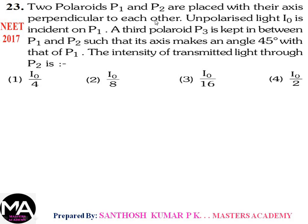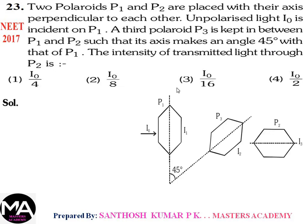Question 23: Two polaroids P1 and P2 are placed with axes perpendicular to each other. Unpolarized light I0 is incident on P1. A third polaroid P3 is kept between P1 and P2 with its axis at 45° to P1. Find the intensity of transmitted light through P2. Light passing through P1 gives I1 = I0/2. P3 is at 45° to both P1 and P2.